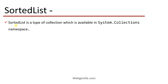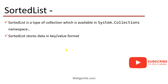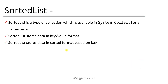Let's have a look at what is sorted list. Sorted list is a type of collection. Basically this is a non-generic collection and this sorted list is available in the system.collections namespace. Sorted list stores data in key-value format, similar to the hash table which we have already learned in a previous part, but there is a main difference — sorted list stores data in sorted format based on key.